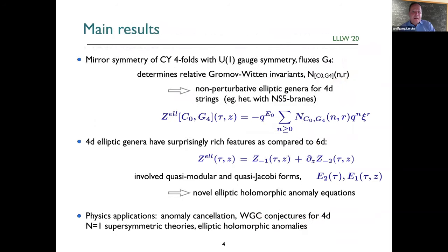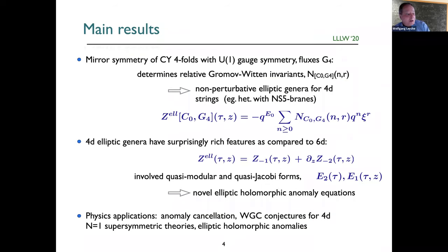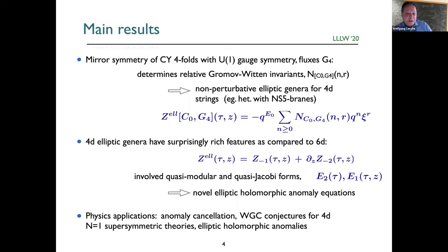Here are some of the main results, which I will explain in more detail later. We find that mirror symmetry on Calabi-Yau four-folds, with a U(1) gauge symmetry in the background of four-form fluxes (G4), determines certain relative Gromov-Witten invariants. These allow us to determine and compute non-perturbative elliptic genera in four dimensions. Non-perturbative here means, for example, a heterotic background with extra NS5-branes, small instantons, or similar objects on top.